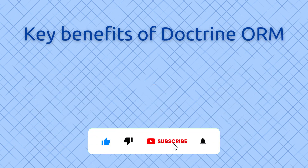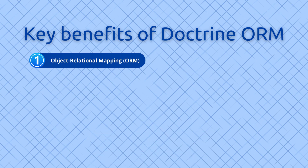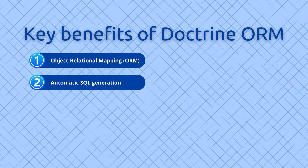Key benefits of Doctrine ORM: Object relational mapping bridges the gap between object-oriented programming and relational databases by allowing developers to work with PHP objects instead of raw SQL or database rows, providing a seamless way to persist, retrieve, and manipulate data without writing SQL queries manually. Automatic SQL generation automatically generates SQL statements for CRUD — create, read, update, and delete — operations, minimizing the need to write boilerplate SQL code.